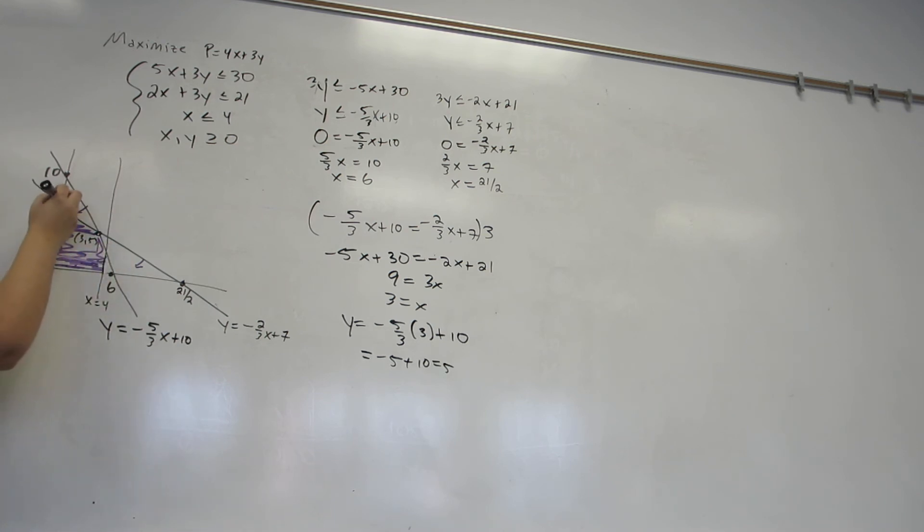Okay, it has 1, 2, 3, 4, 5 corner points, many of which I already know. I already found the 3, 5. This point is 0, 7, then 0, 0, then 4, 0. And this point, we must have x equals 4 because it's on the line x equals 4. It's also on this line. And if you plug in x equals 4 to there, you end up getting 10 thirds.